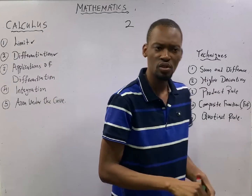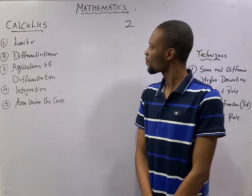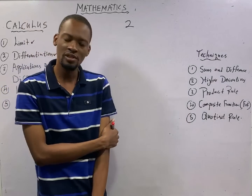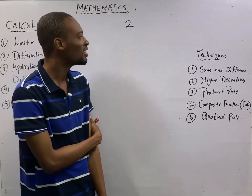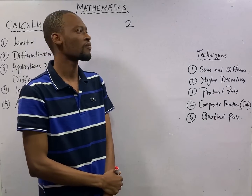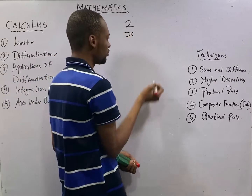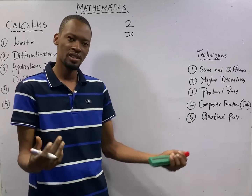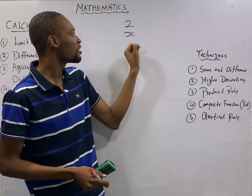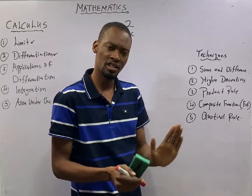When you differentiate any constant — whether 2, 100, 500, one million — as long as the number is standing alone, you will get zero. Differentiation of a constant is zero. If I give you a letter like s, a, b, or c standing alone, once you differentiate it you are going to get one. So when you differentiate s, you get one.